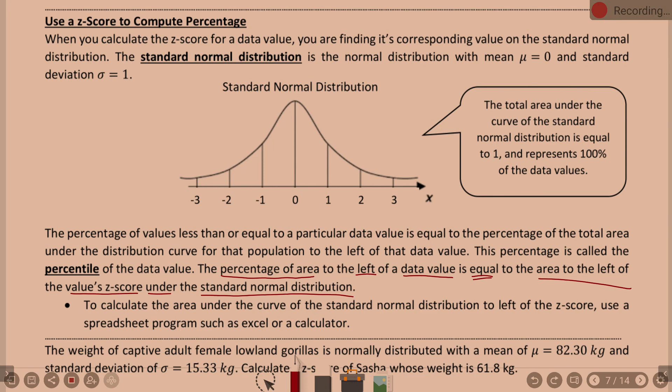To calculate the area under the curve of the standard normal distribution to the left of the Z-score, you're going to use technology. We're going to use Excel to do that — it can also be done on a calculator, but we'll use Excel as our technology here.